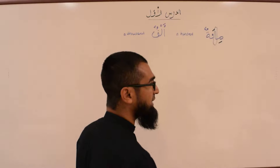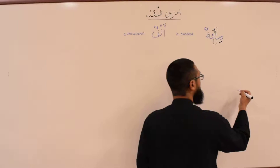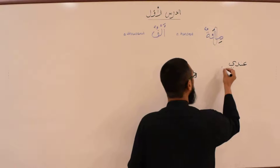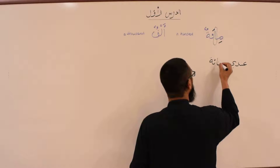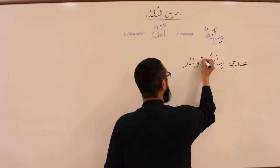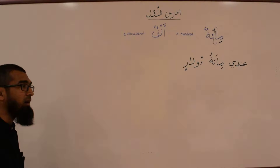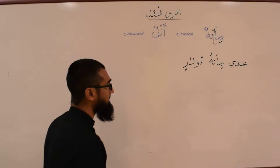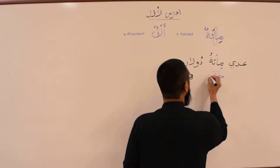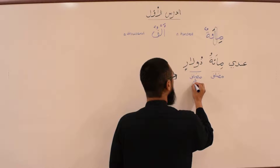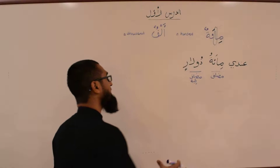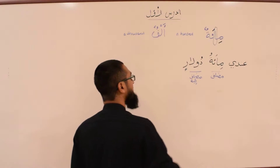And now we're going to learn how to say a hundred of something or a thousand. The way it works is as follows: you can say Indi Mi'atun Dularin — I have a hundred dollars. Mi'atun is the Mudaaf and Dular is the Mudaafun Ilayhi. So like the Adad-Ma'adud, the Adad is Mudaaf; similarly, the number one hundred is the Mudaaf and Dular is the Mudaafun Ilayhi.